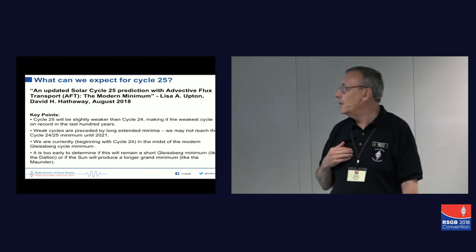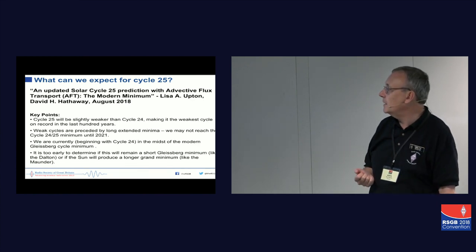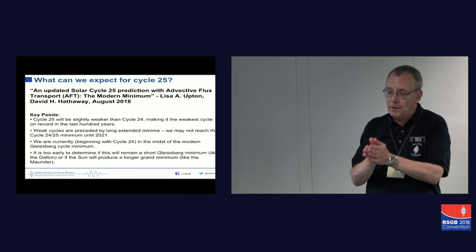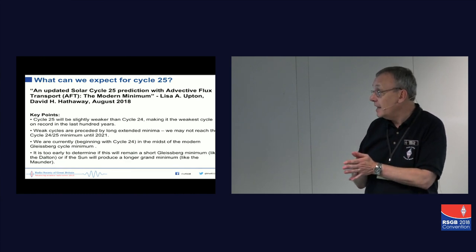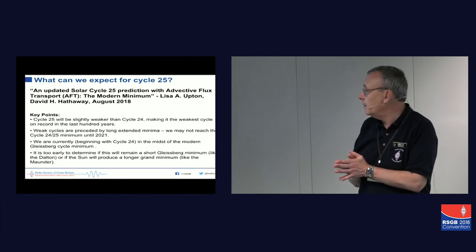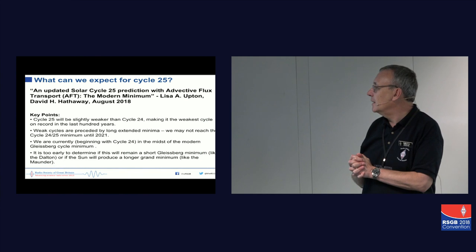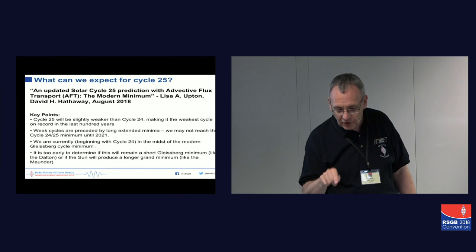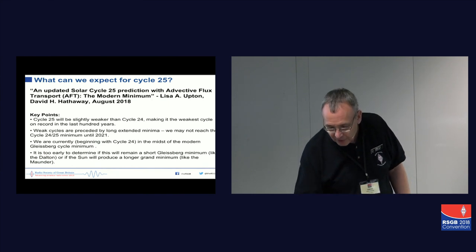In fact, there was an update to that paper by Hathaway and Upton that was released just a couple of months ago. And it's now saying cycle 25 is likely to be slightly weaker than 24, could be the weakest cycle on record in the last 100 years. And it says weak cycles are preceded by long extended minima, so we may not reach the cycle 24 minimum until 2021. So, again, we were originally thinking the minimum would be September 19. Now it could be until 2021. So if you don't like the conditions that we're getting right now, tough.